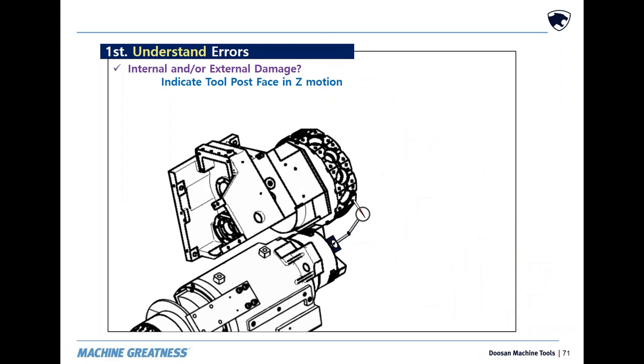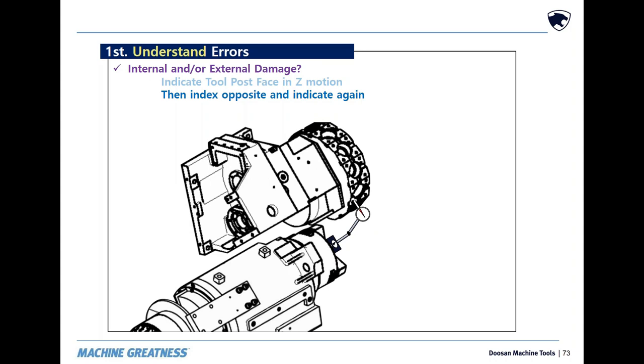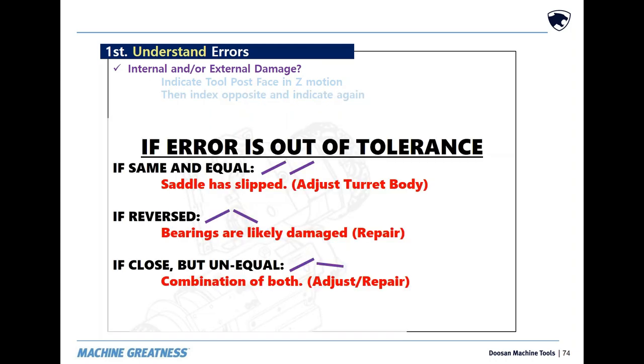And second is parallelism to Z axis. Indicate in Z, index the turret 180 degrees, and then indicate Z again. If both faces are out the exact same direction, then the saddle has slipped. If the show is reversed, the bearing has cantilevered. And the last on the list is a combination of the two actions.